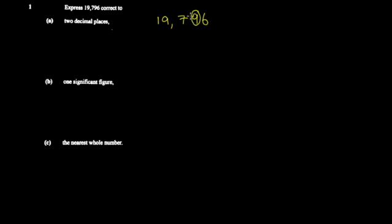The first decimal place and then the second decimal place. Then you look at the third decimal place — the digit to the right — and analyze how it affects the digit you've secured. Here, six is greater than five, so we round up. Rounding up nine gives ten, so it becomes zero and you carry the one.